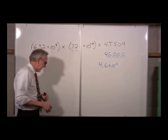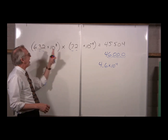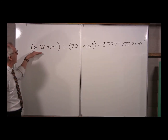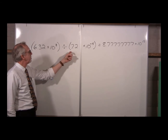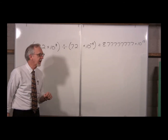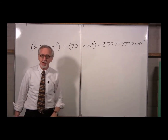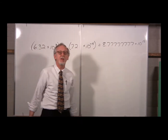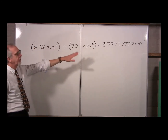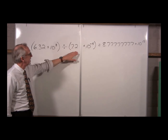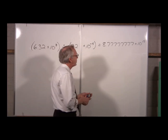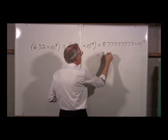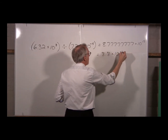What about division? Let's divide 6.32 times 10 to the 8th by 7.2 times 10 to the negative 5th. The calculator gives 8.77777... times 10 to the 12th. We have 3 and 2 sig figs, so we keep two. Rounding the 7 up, we write this as 8.8 times 10 to the 12th.